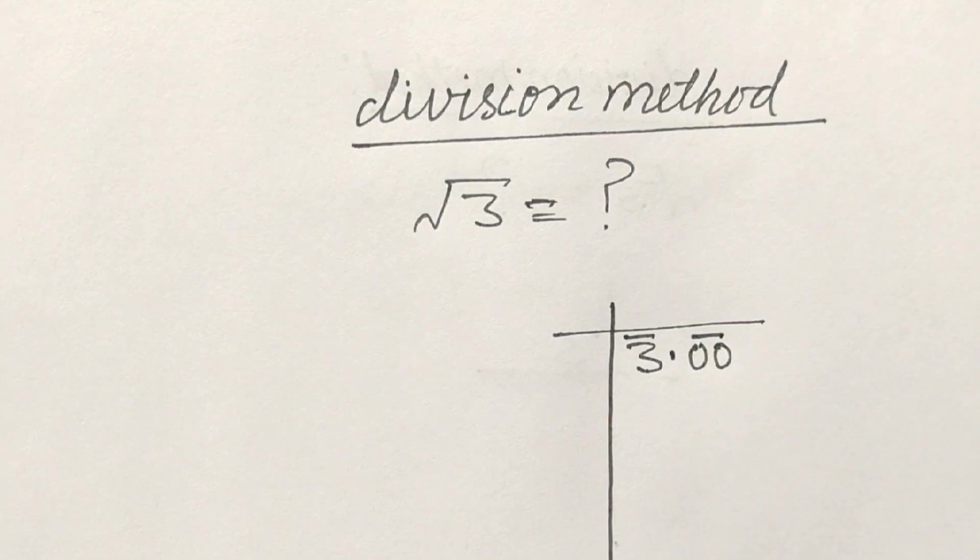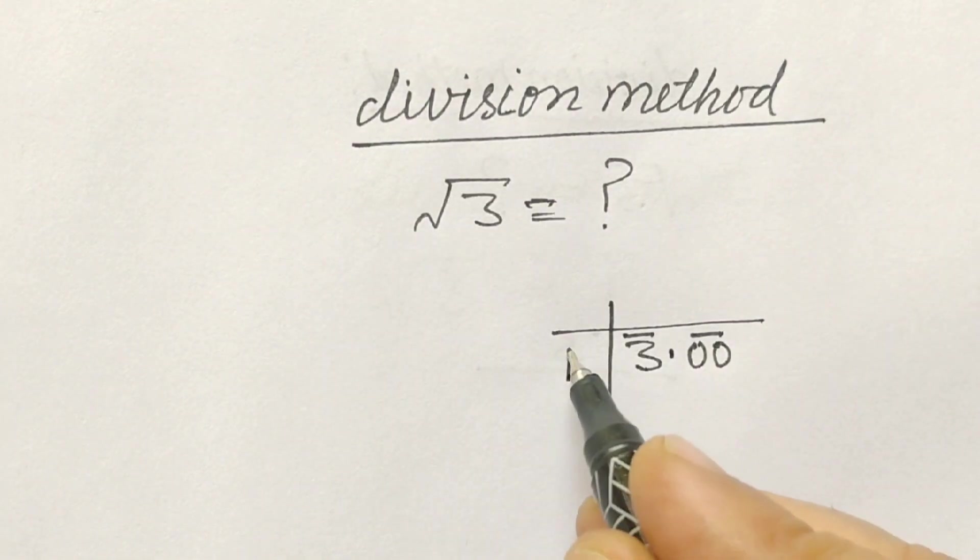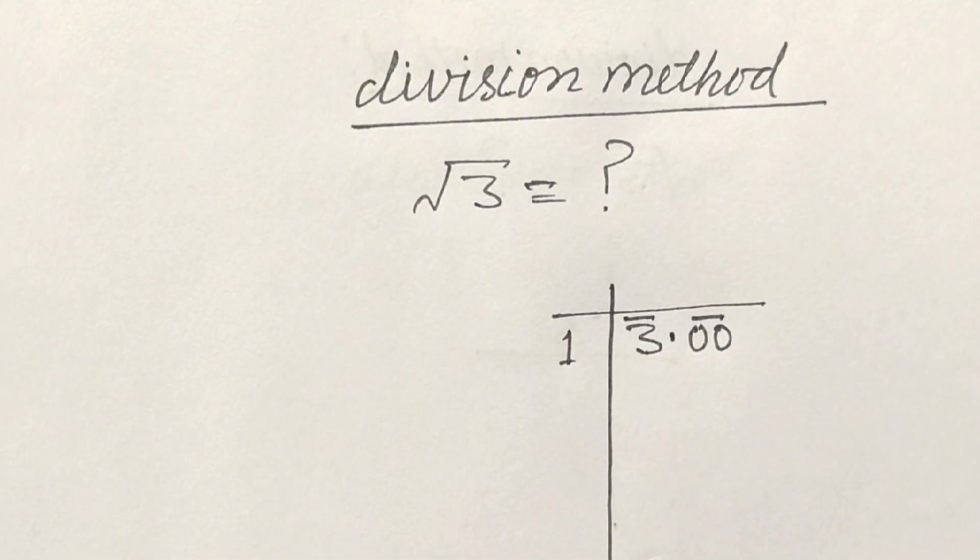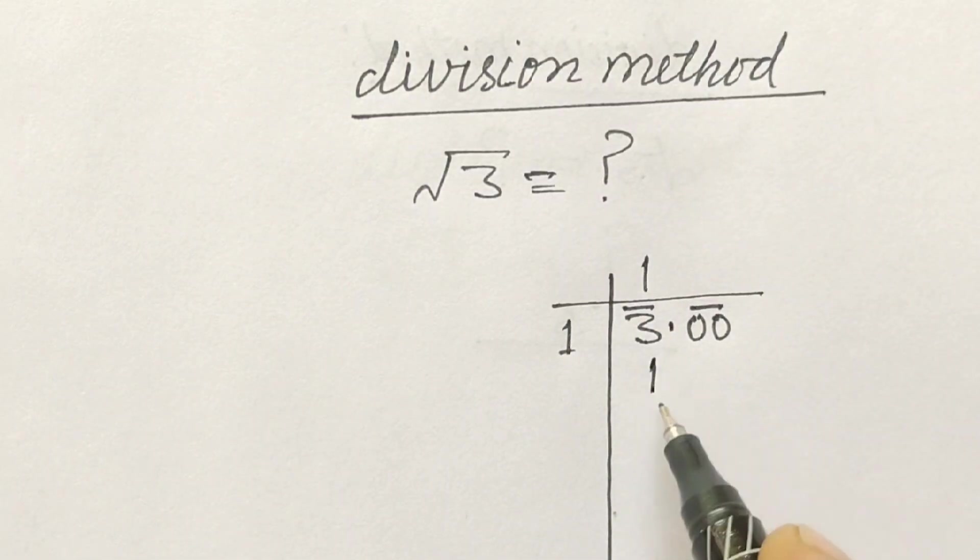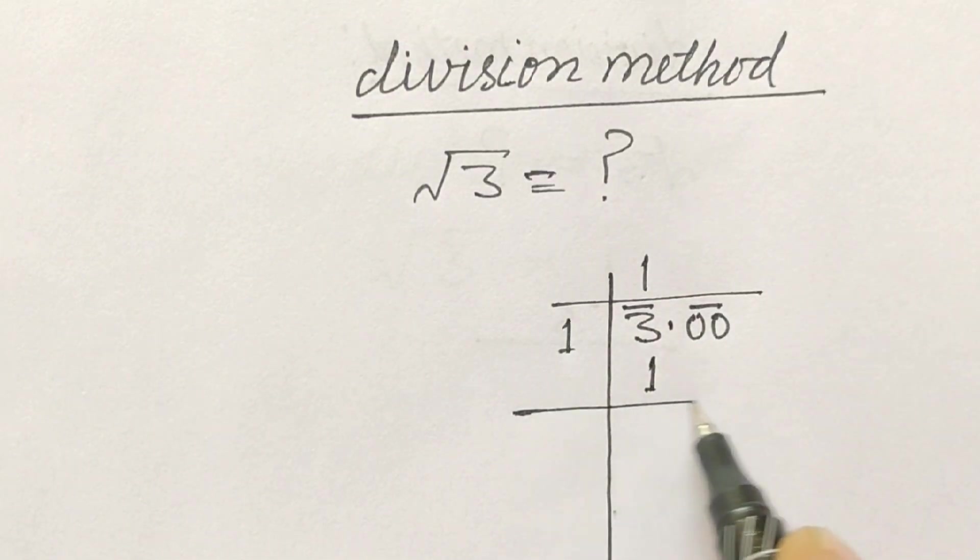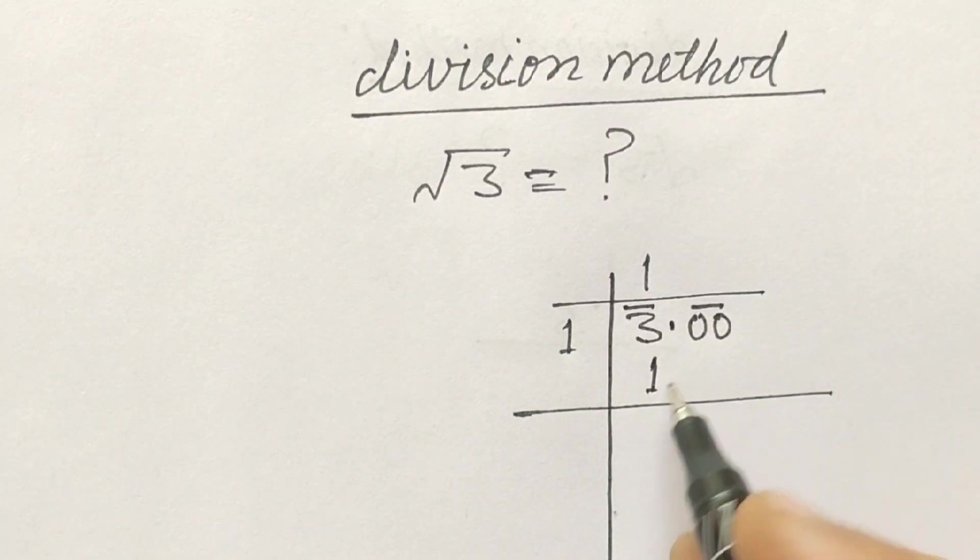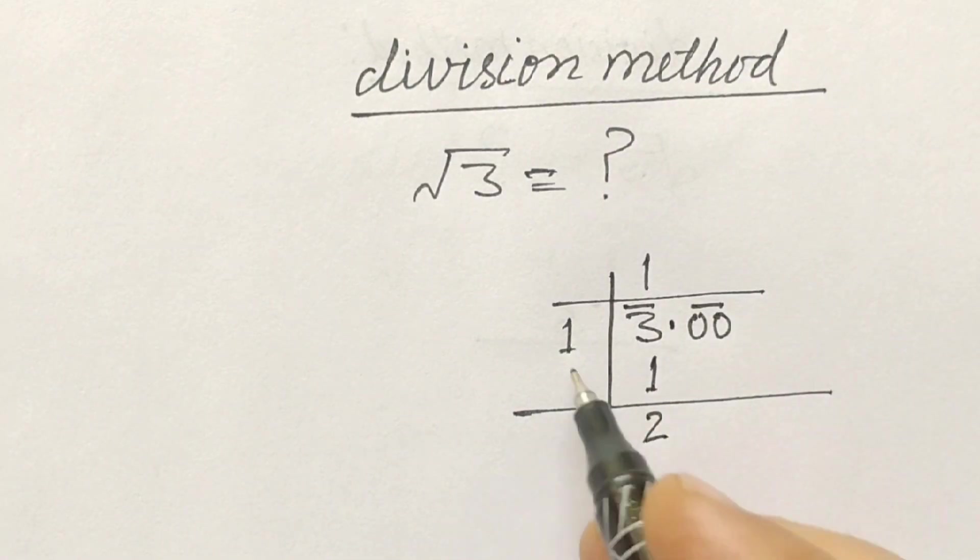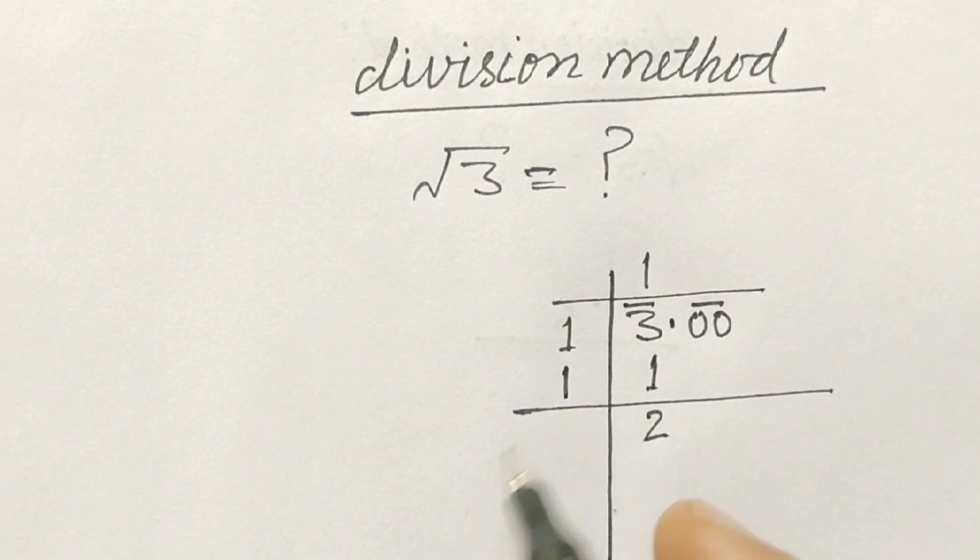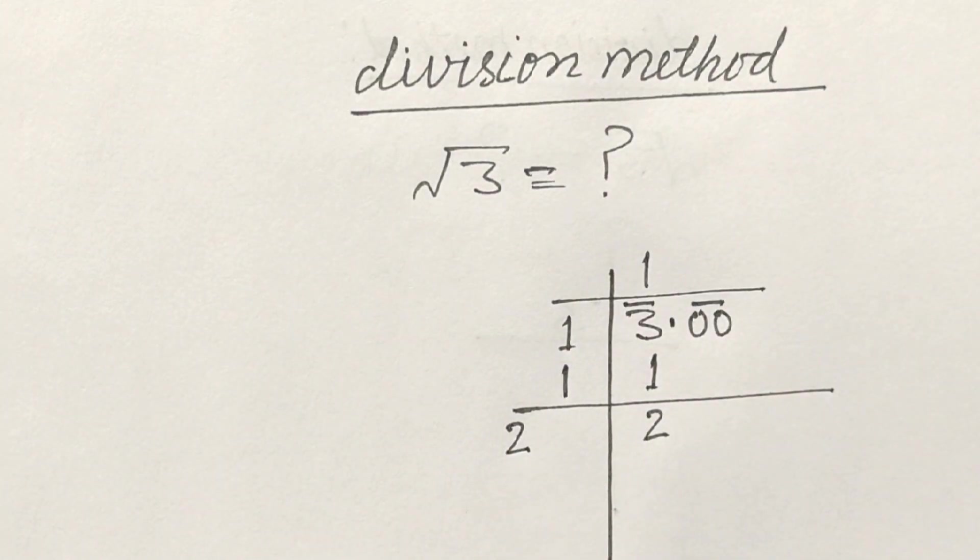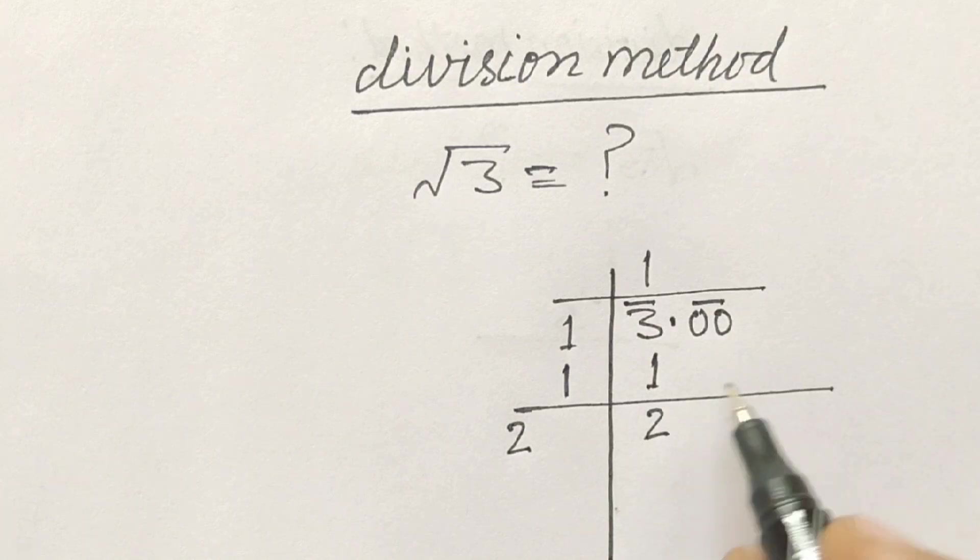Now 1 will be divisor, so 1, 1, 1, 1 time. Here 3 minus 1 is 2, and here we will write 1 also. So 1 plus 1 is 2.